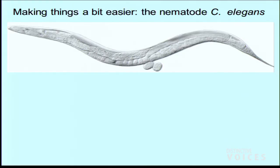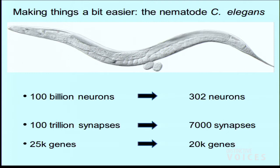We can make things simpler by studying how the brain forms in this little roundworm, the nematode C. elegans. This is a small, transparent worm about the size of a human hair — roughly the size of a comma at the end of a sentence. It's found everywhere in soil or rotting fruit, and it eats bacteria. Instead of 100 billion neurons, C. elegans has 300 neurons; instead of hundreds of trillions of synapses, it has only 5,000 to 7,000 chemical synapses and around 20,000 genes.